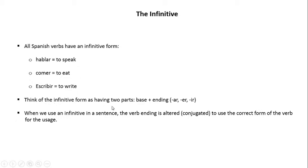Think of the infinitive form as having two parts. There's a base, and there's an ending. The ending being, once again, either AR, ER, or IR. When we use an infinitive in a sentence, the verb ending is altered — that is, conjugated — to use the correct form of the verb for the usage.